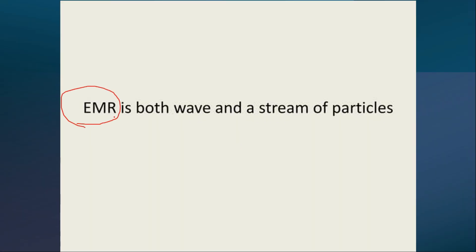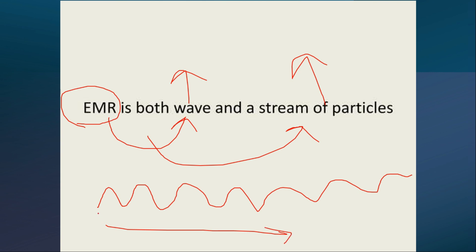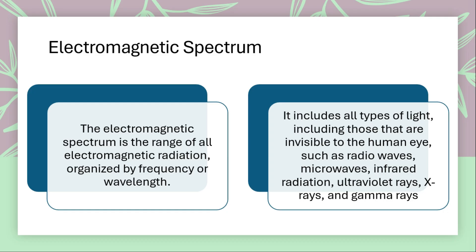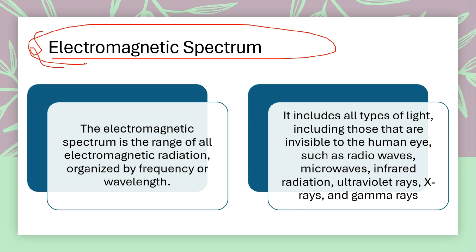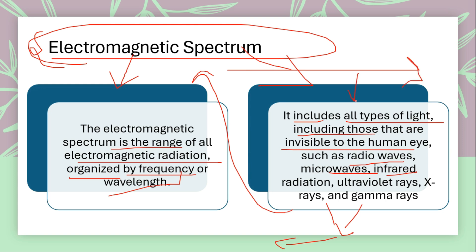Electromagnetic radiation is both a wave and a stream of particles. This electromagnetic radiation is a combination of different wavelengths and frequencies. The full range from higher to lower frequency — or lower to higher wavelength — is described under the electromagnetic spectrum. The electromagnetic spectrum includes all types of electromagnetic radiation, including those invisible to the human eye such as radio waves, microwaves, infrared, ultraviolet, X-rays, and gamma rays.